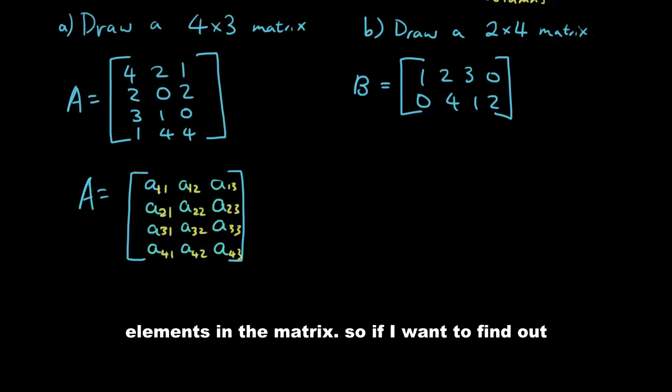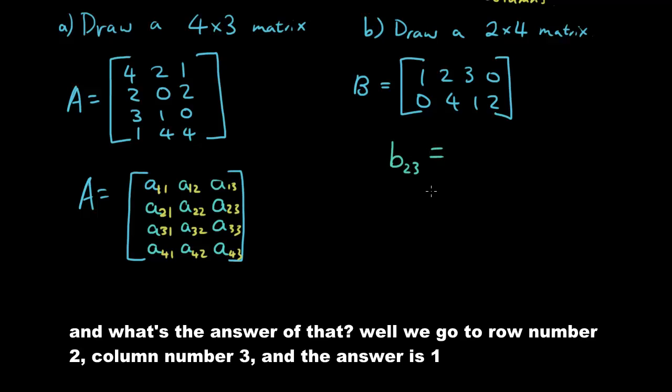So if I want to find out what, so I have matrix B here and if I want to find out B23 and what's the answer of that? Well we go to row number 2, column number 3 and the answer is 1.